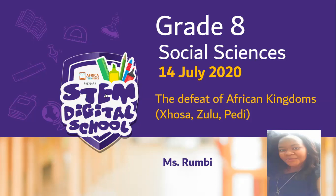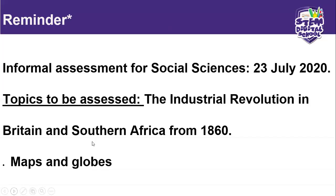Okay. As I wait for Katleko to give me the surname, let's proceed. Just a reminder: next week we are writing informal assessments. For Social Sciences, you are going to write on the 23rd of July. I'll give you a test — an informal assessment.